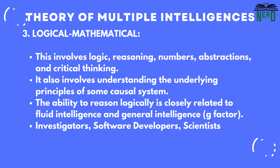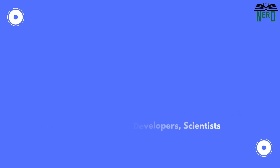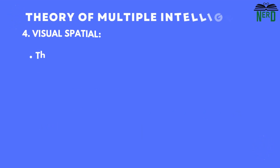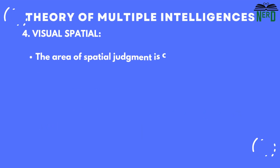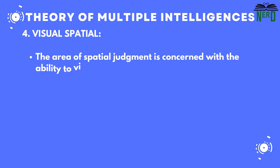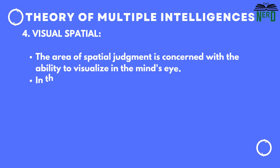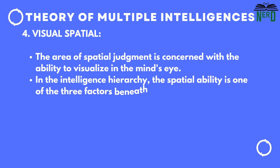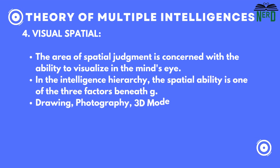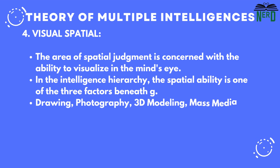Fourth is visual-spatial. The area of spatial judgment concerns the ability to visualize in the mind's eye. In the intelligence hierarchy, spatial ability is one of the three factors beneath G. They are interested in drawing, photography, 3D modeling, and mass media.